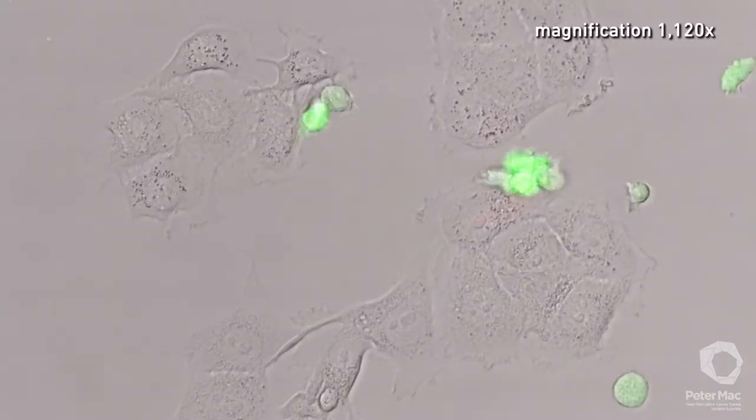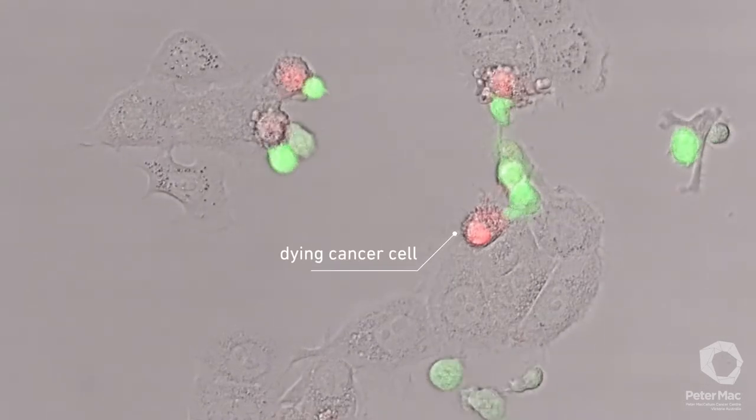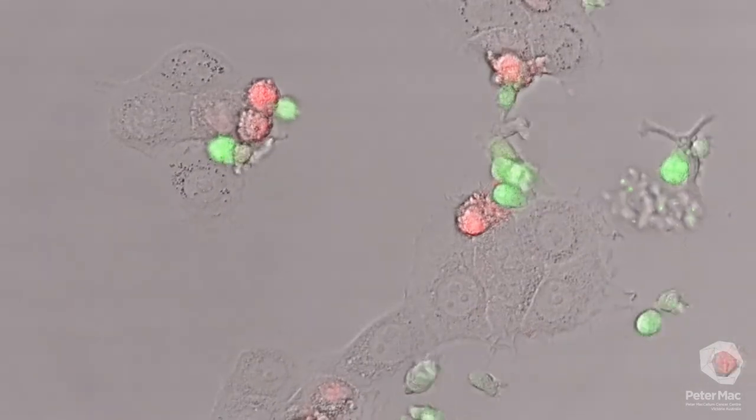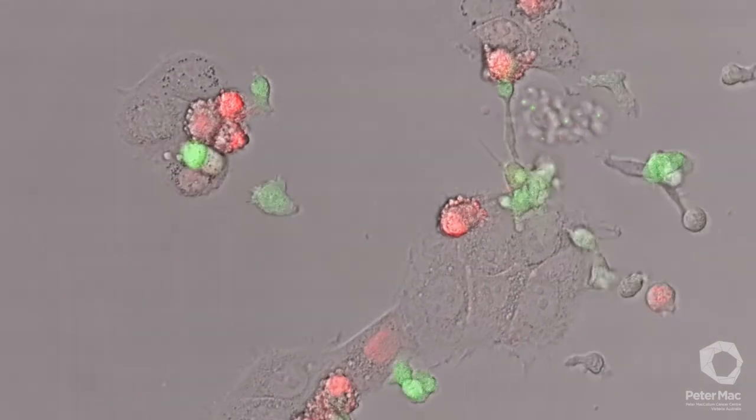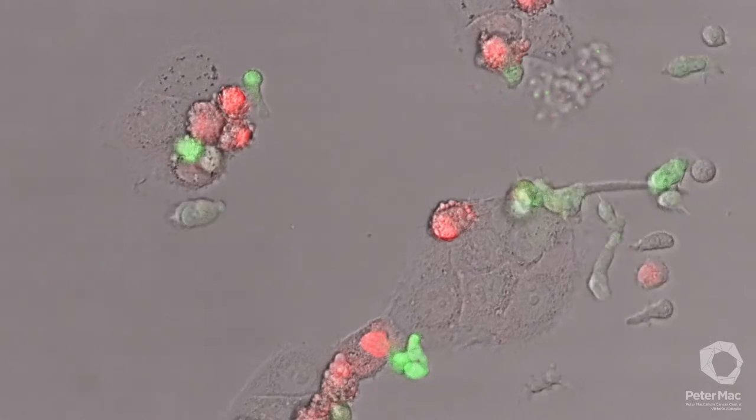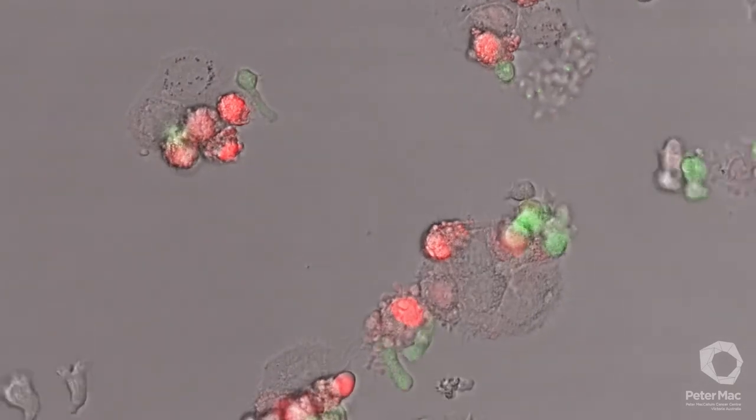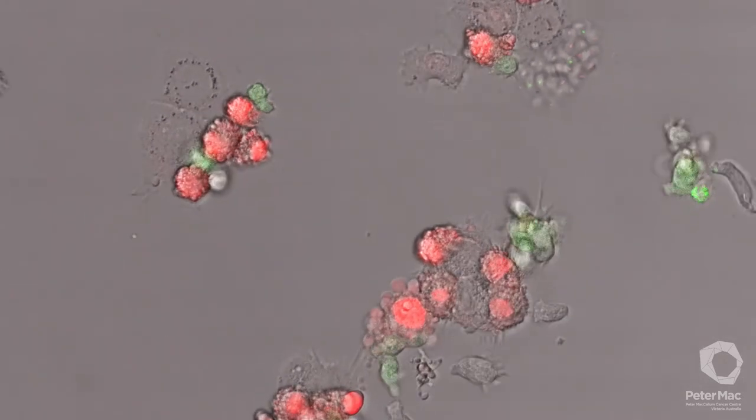Once activated, the green CAR T cells release toxic chemicals into the cancer cells, which kills them, indicated in red. CAR T cells are known as serial killers because they can kill, release and move on to kill other cancer cells in a cycle that can occur multiple times. This makes them very effective in the fight against cancer.